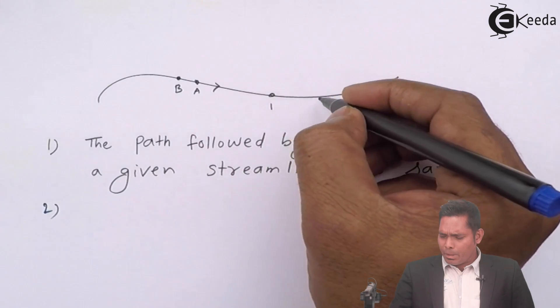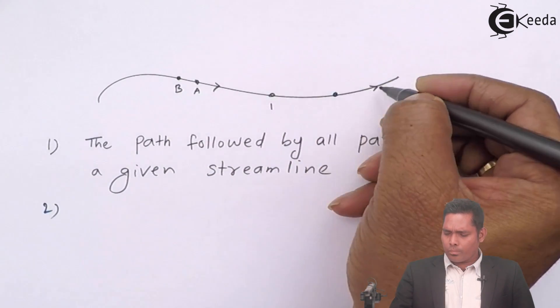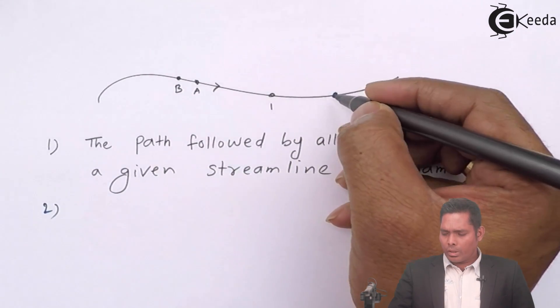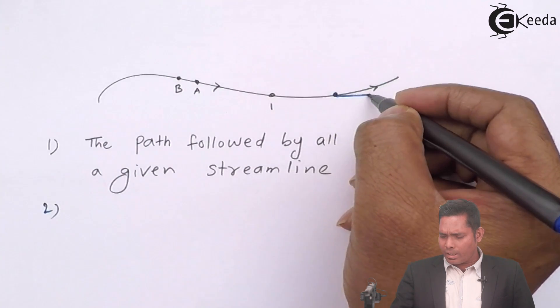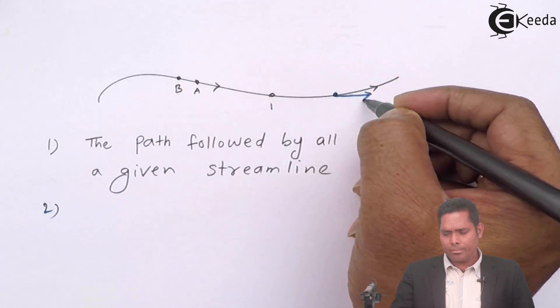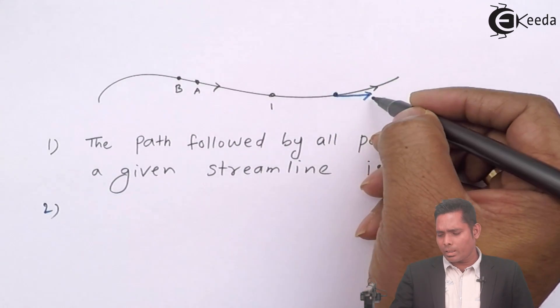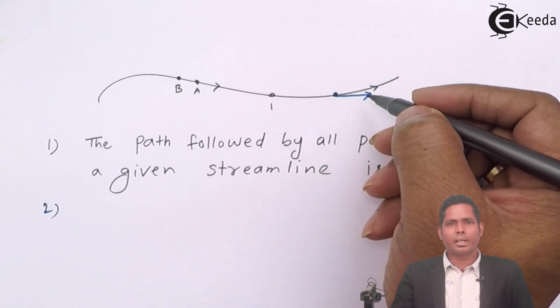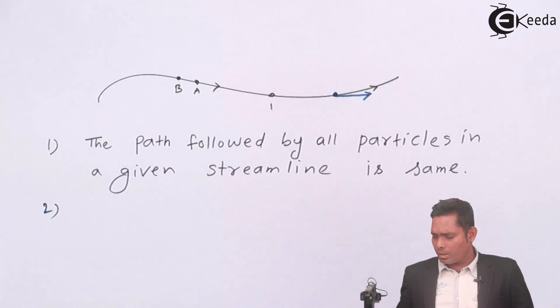The second point is that at any point in the flow, the tangent drawn at that point gives the direction of velocity.